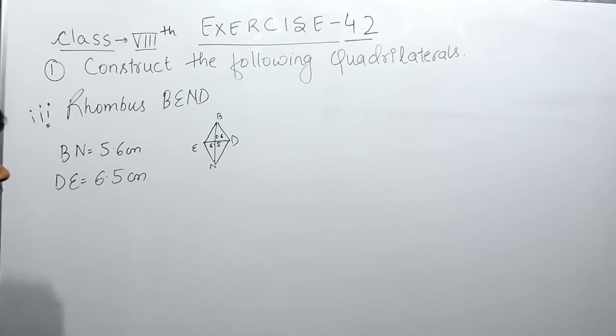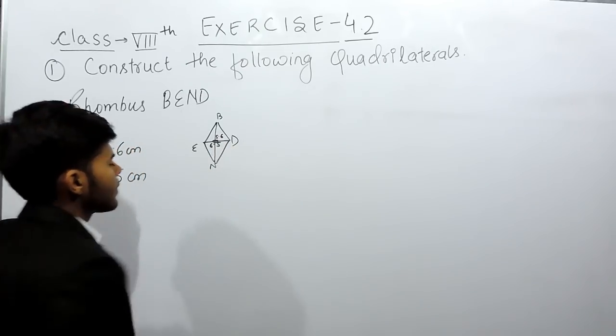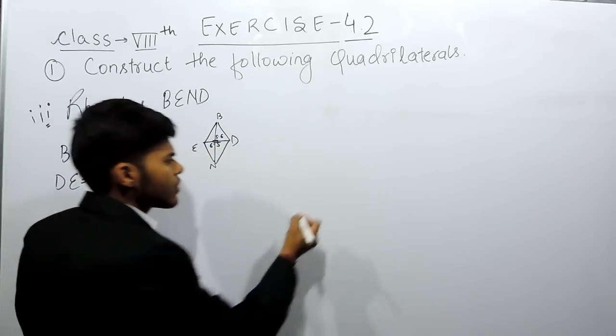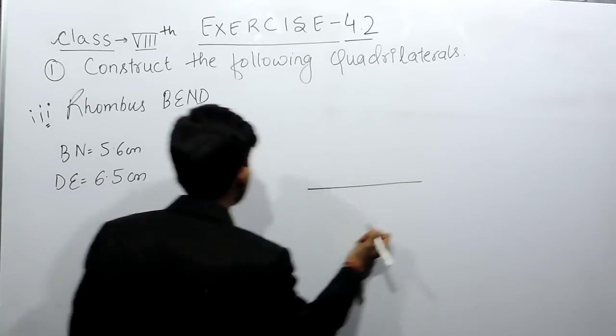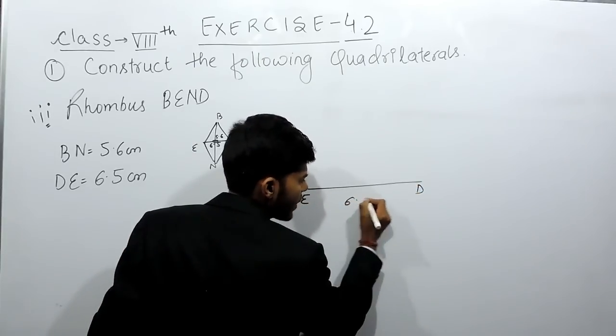Now, what we will do is, we should know that this makes an angle of 90 degrees. The diagonals bisect each other at 90 degrees. So first of all, we will draw the line segment ED, 6.5 cm.